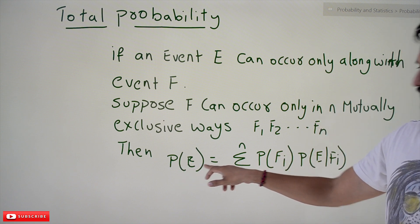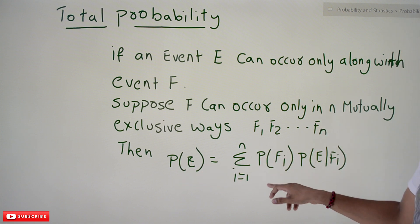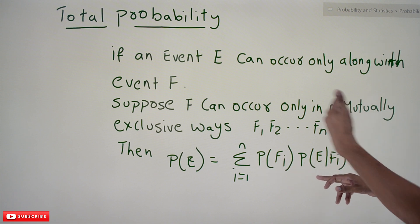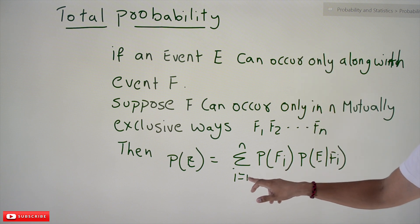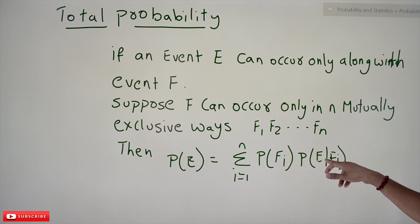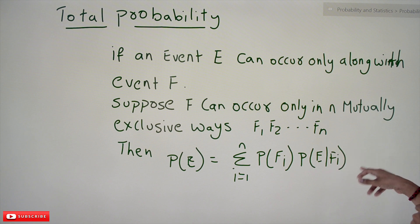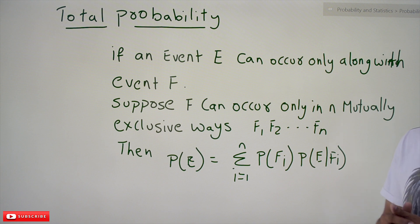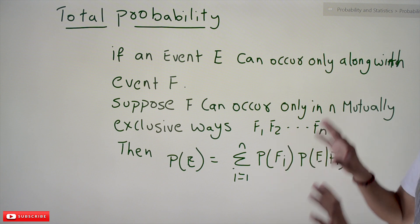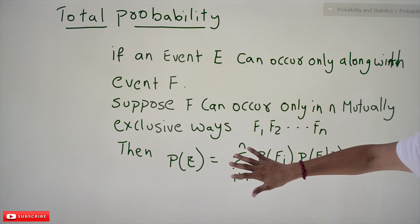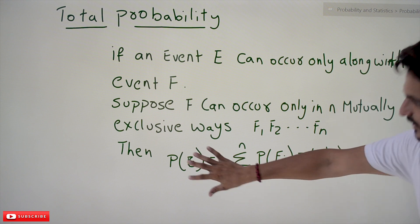The probability of E is given as sigma from i equals 1 to N of: probability of Fi times probability of E given Fi. That is what we applied in our example where N equals 2: probability of F1 times probability of E given F1, plus probability of F2 times probability of E given F2. If you have N plants, this equation extends to N terms. This is what total probability means and how we identify it.